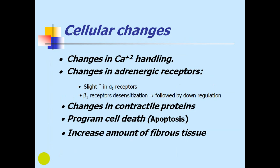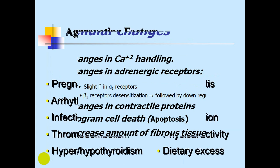At the cellular level, there are changes in calcium handling, adrenergic receptors, and contractile proteins, as well as programmed cell death and an increased amount of fibrous tissue.